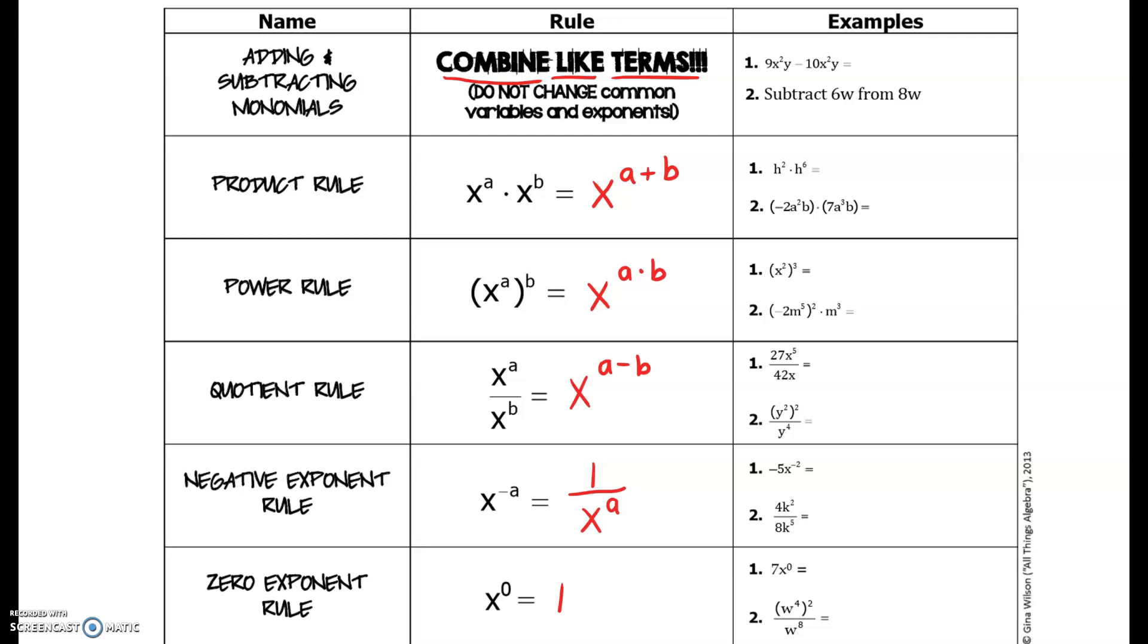Now something I would recommend doing right here is pause the video and go through the example column on your own. Go through and try and simplify each one of these questions. There are 12 all together, two examples for each rule. And then restart the video and double check that you were able to simplify these correctly.